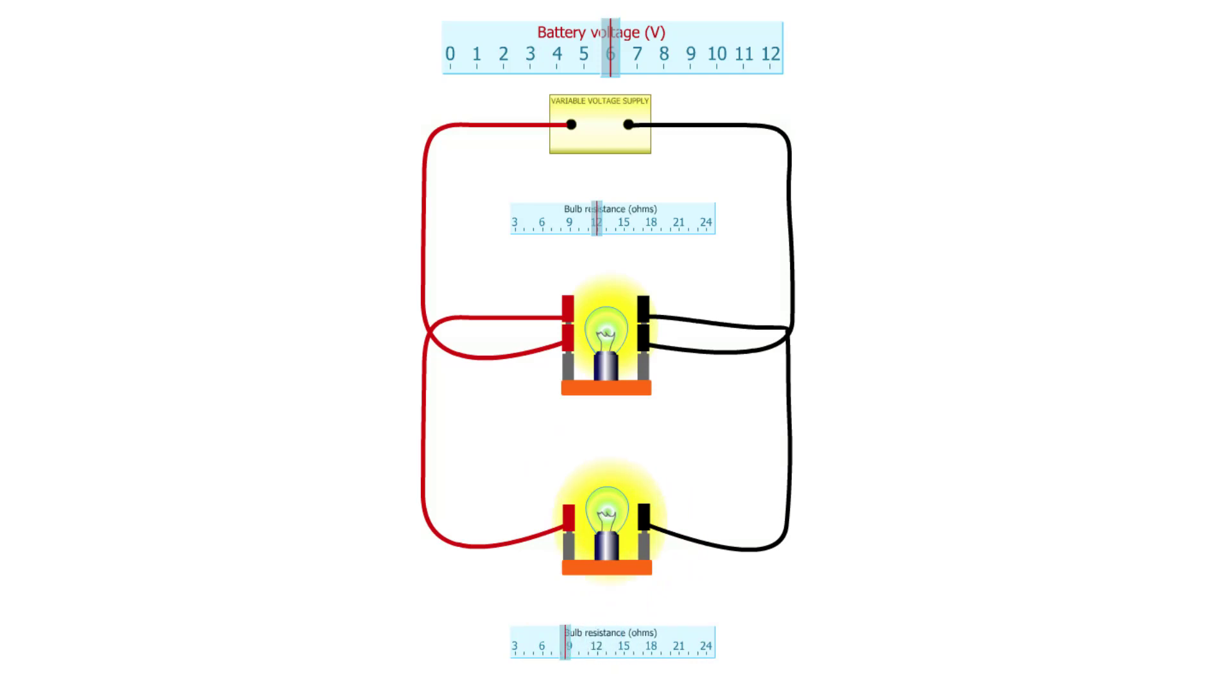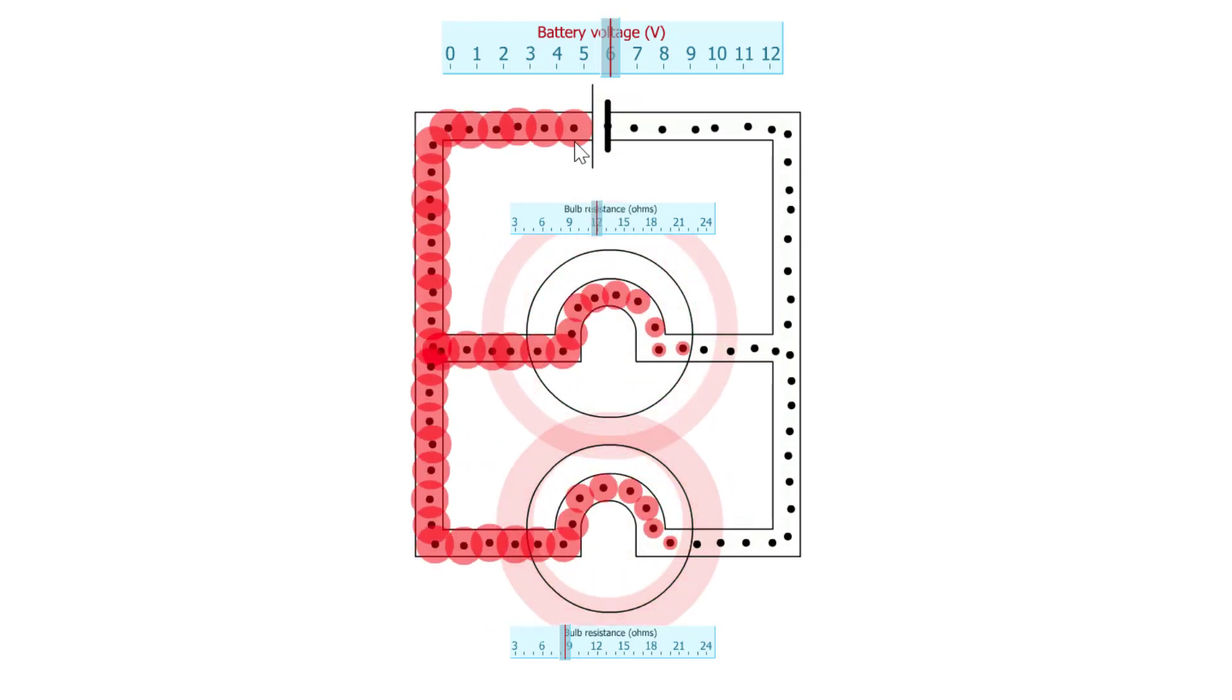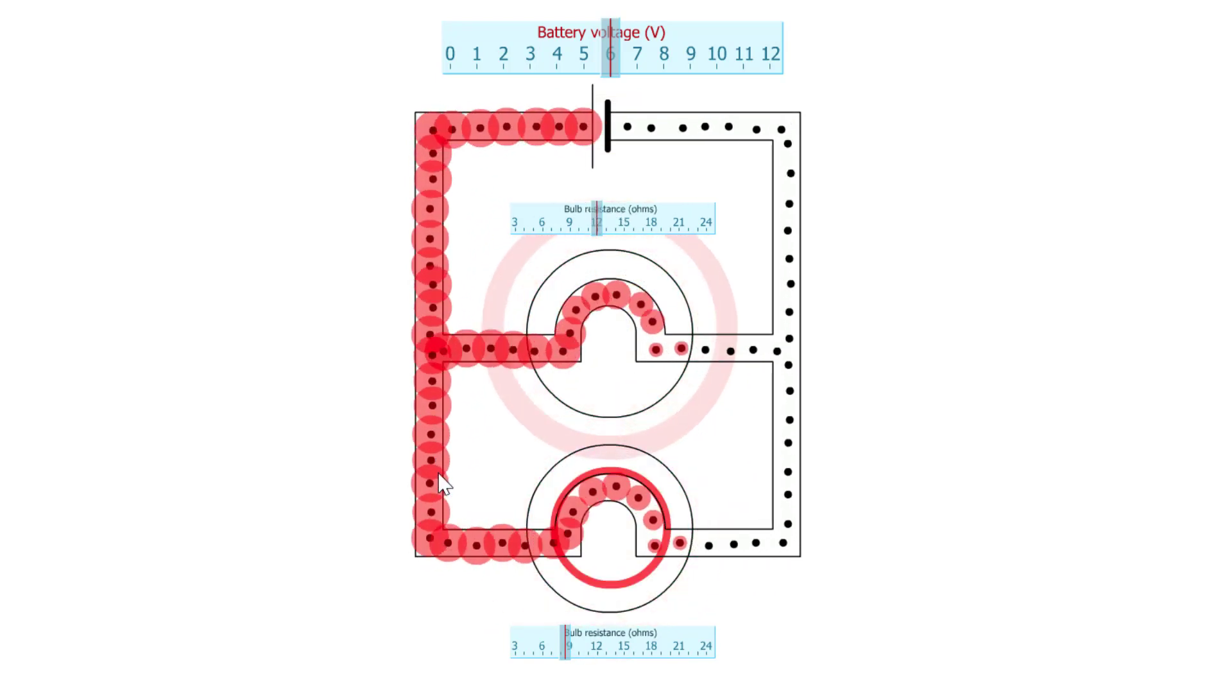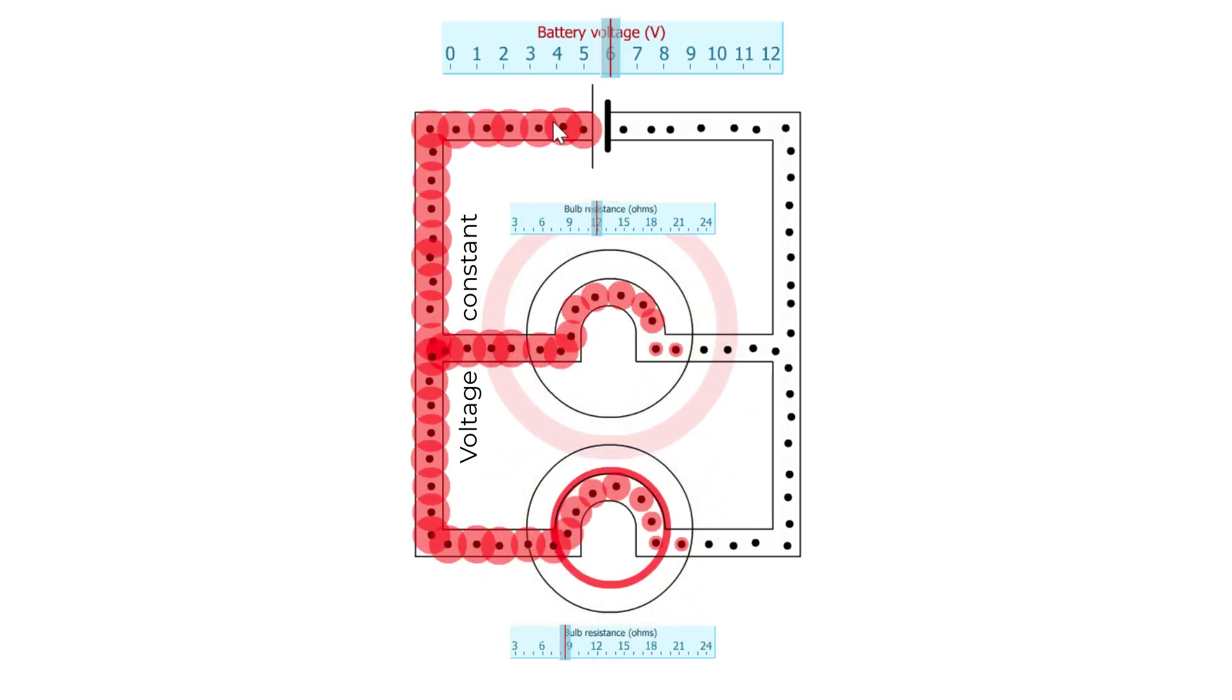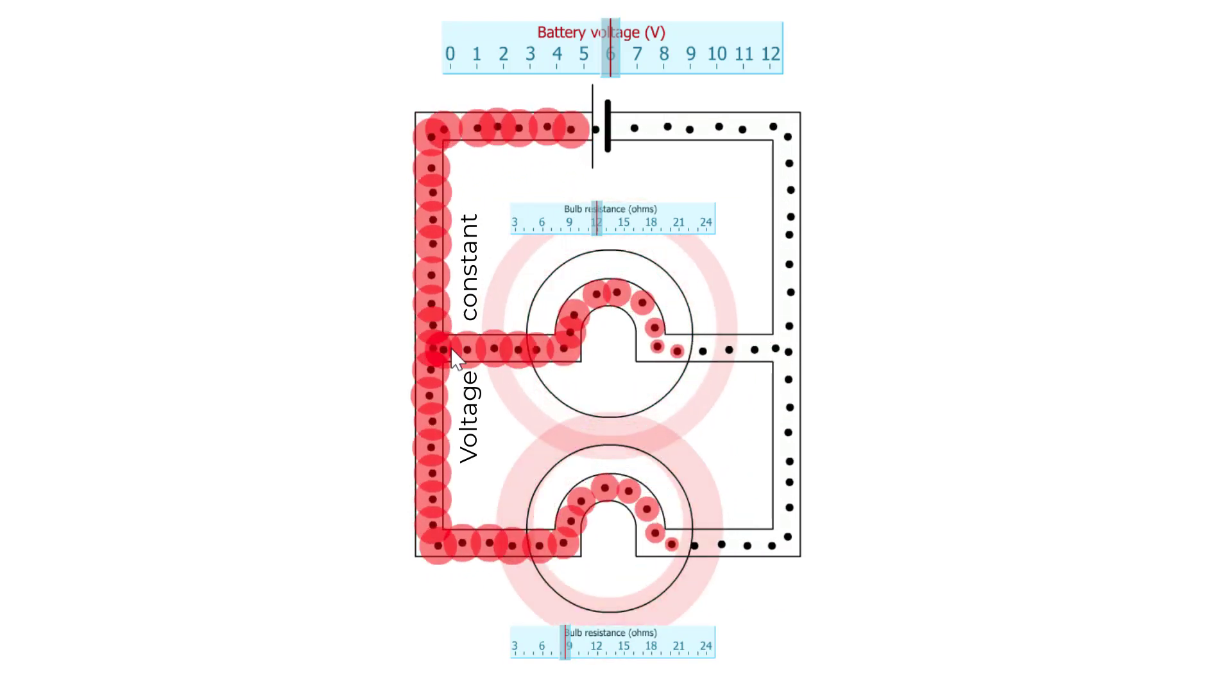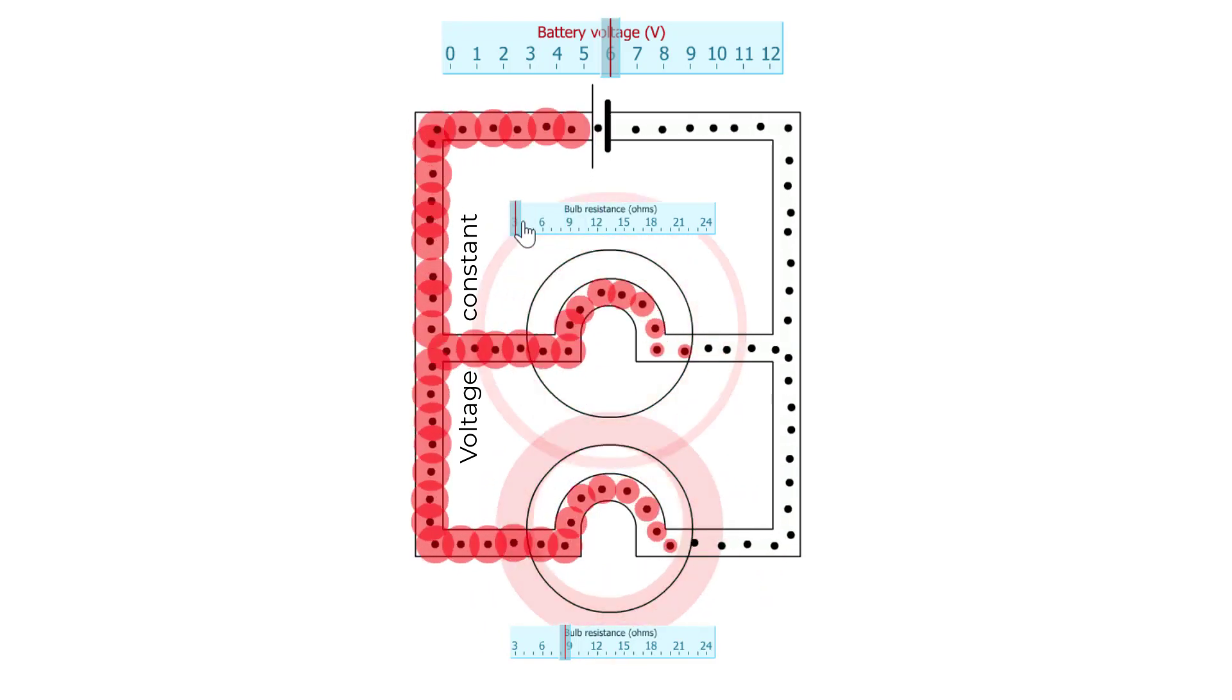If we look at the simulation view then we can see that the voltage on this side remains constant. In other words, the amount of red stuff per black dot stays the same regardless of what I do to the bulbs.